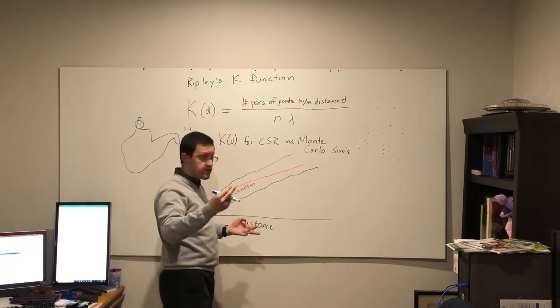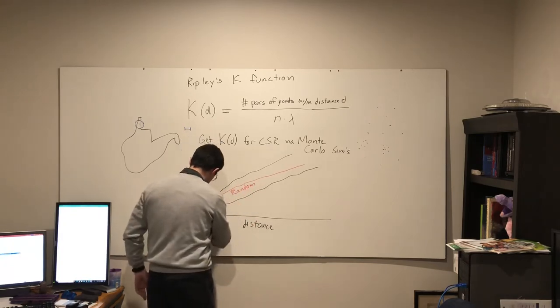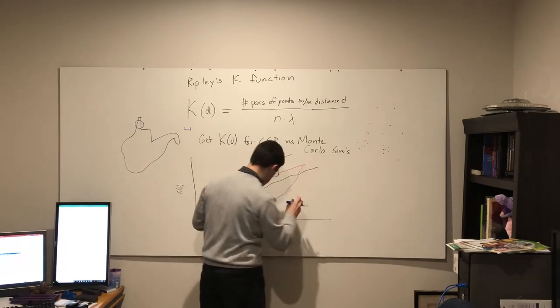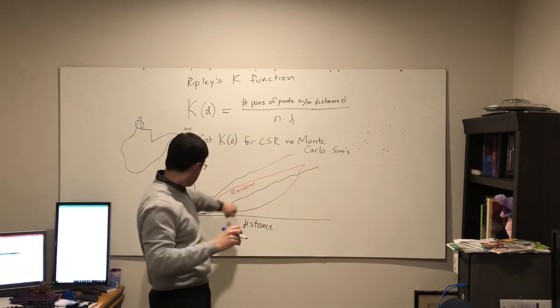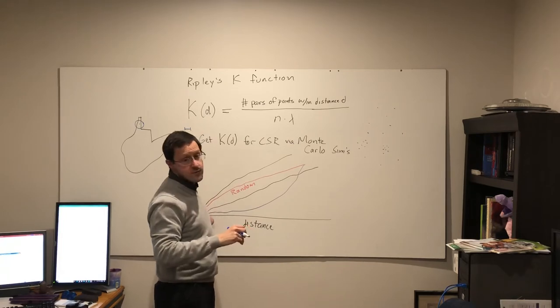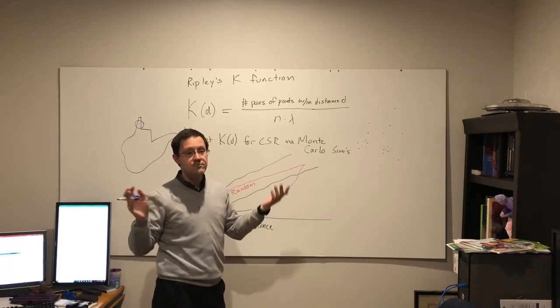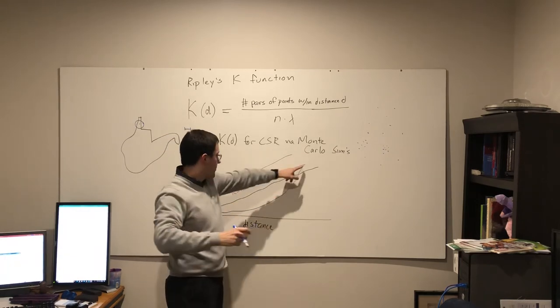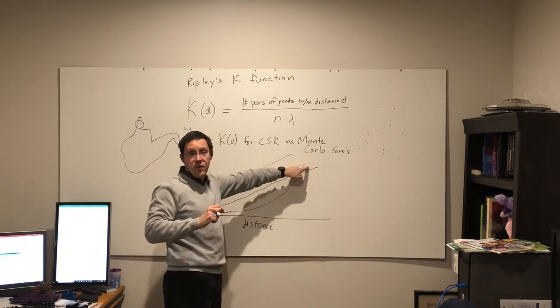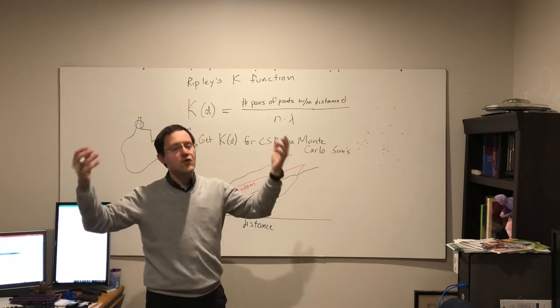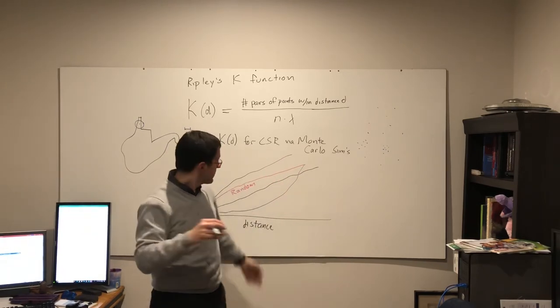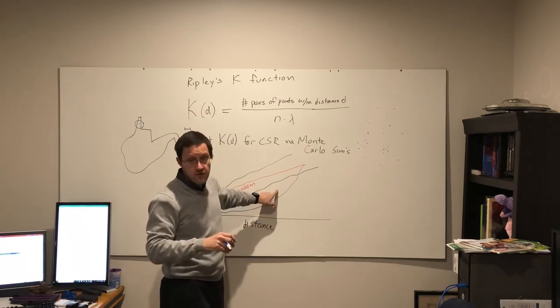If, on the other hand, the K function... Eventually at the lowest end it's always going to be zero. There's no points that are right on top of each other. And at the top end, the longest distance where every point is included because it's the longest possible distance in the study area.